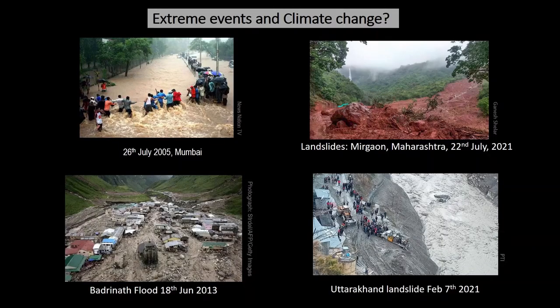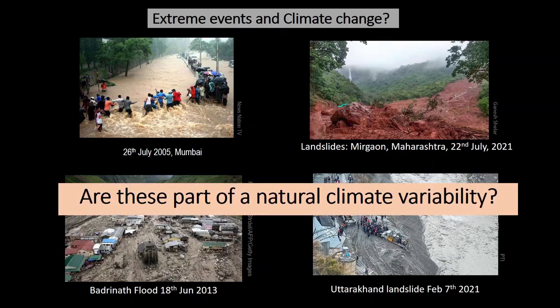You must have seen these dramatic pictures representing extreme weather-induced disasters. The top left picture shows the flood that occurred in 2005 in Mumbai, where it rained more than 1000 millimeters in a day. The top right picture shows a recently occurred landslide in the Koina Reservoir Region of Maharashtra. The bottom left shows the Badrinath flood of 2013, and the Uttarakhand landslide of 7th February 2021 is shown bottom right. The question that comes to mind is: are these disasters part of natural climate variability, or is human-induced climate change responsible?